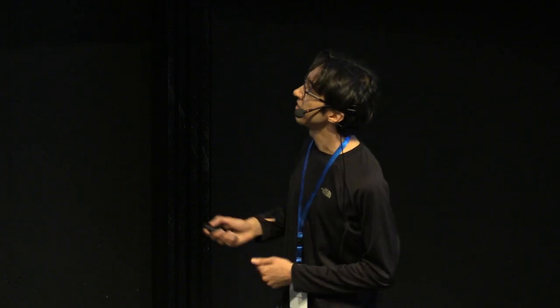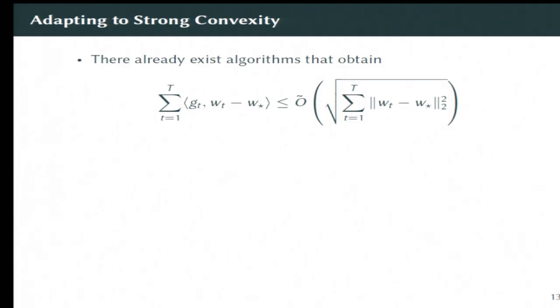What about strong convexity? Well, there are actually some previous algorithms that get a regret bound in the online linear optimization case that looks like this kind of wonky expression, where the regret actually depends on the sequence of vectors w_t that the algorithm outputs. But don't worry too much about interpreting this too carefully right now, but it is important to realize that if you apply a sort of tricky one-line argument, you can show that this particular regret bound implies logarithmic regret when the losses are strongly convex.